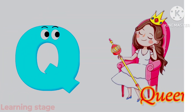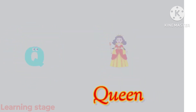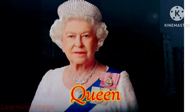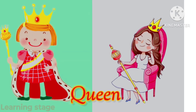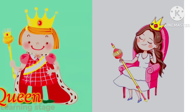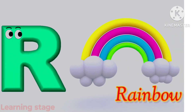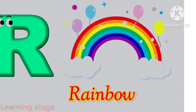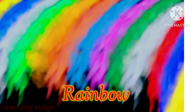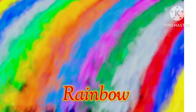Q is for queen, queen. R is for rainbow, rainbow.